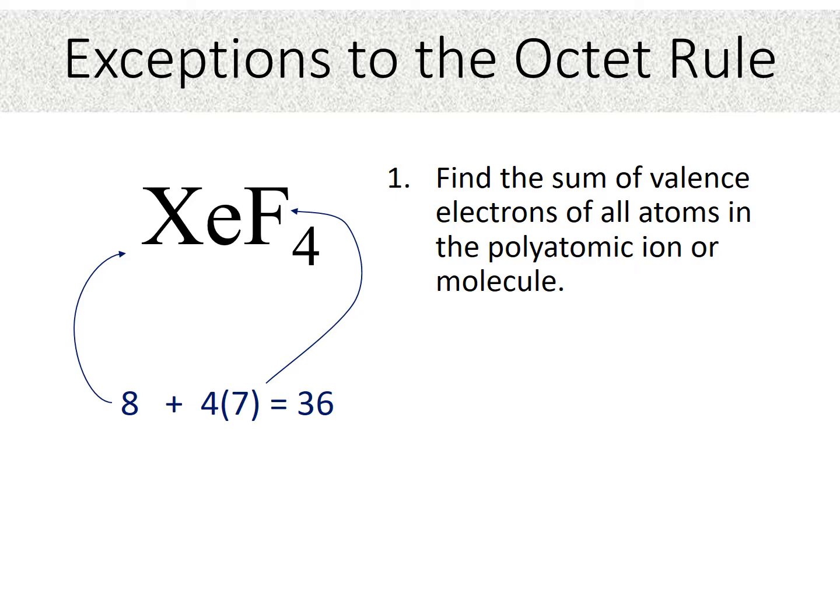Let's go through and draw more Lewis structures. In this case, we're going to be looking at one of the exceptions to the octet rule, which is the largest exception, and that is those structures that have more than an octet because the d electrons get involved.